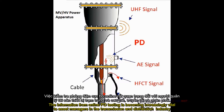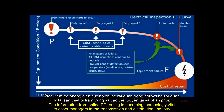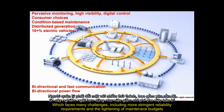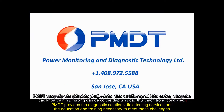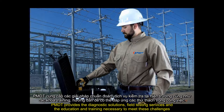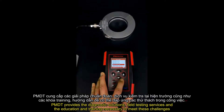The information from online PD testing is becoming increasingly vital to asset managers in the transmission and distribution industry, which faces many challenges including more stringent reliability requirements and the tightening of maintenance budgets. PMDT provides the diagnostic solutions, field testing services, and the education and training necessary to meet these challenges.